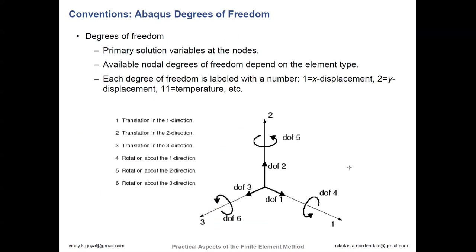The degrees of freedom in Abaqus are the primary solution variables at the nodes. Available nodal degrees of freedom depend on the element types — for example, shell elements don't have as many degrees of freedom as a full 3D solid element. Each degree of freedom is labeled with a number: 1 is X, 2 is Y, 3 is Z, 4 is rotation about one, 5 is rotation about two, 6 is rotation about three. Those are your six primary degrees of freedom. There are additional degrees of freedom depending on the element type, for example degree of freedom 11 is temperature.